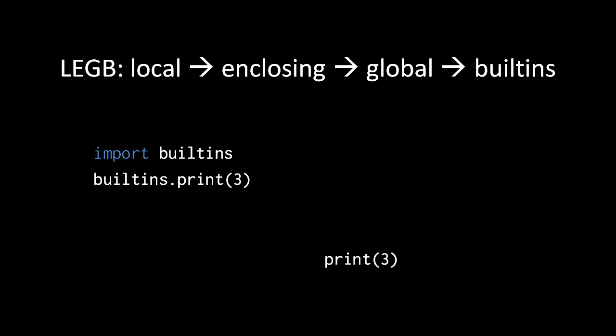And then if it's not found in any of those, it looks in the global scope, also known as the module scope, and if it's not found there, it'll then search in the built-ins scope. So in Python, we call this the rule of LEGB: local, enclosing, global, built-ins.